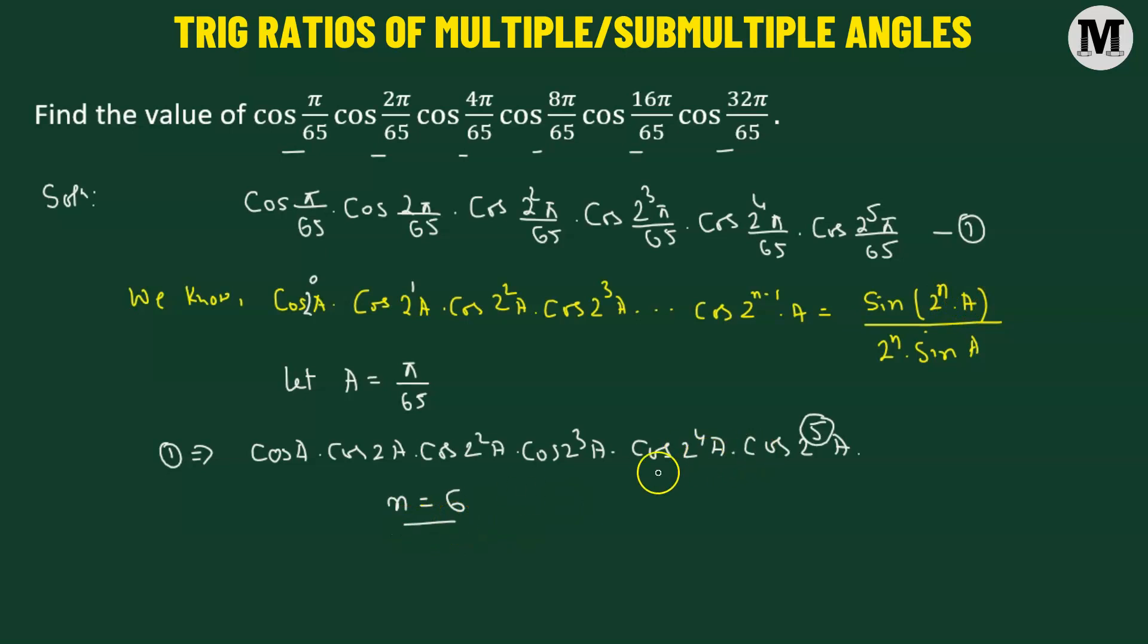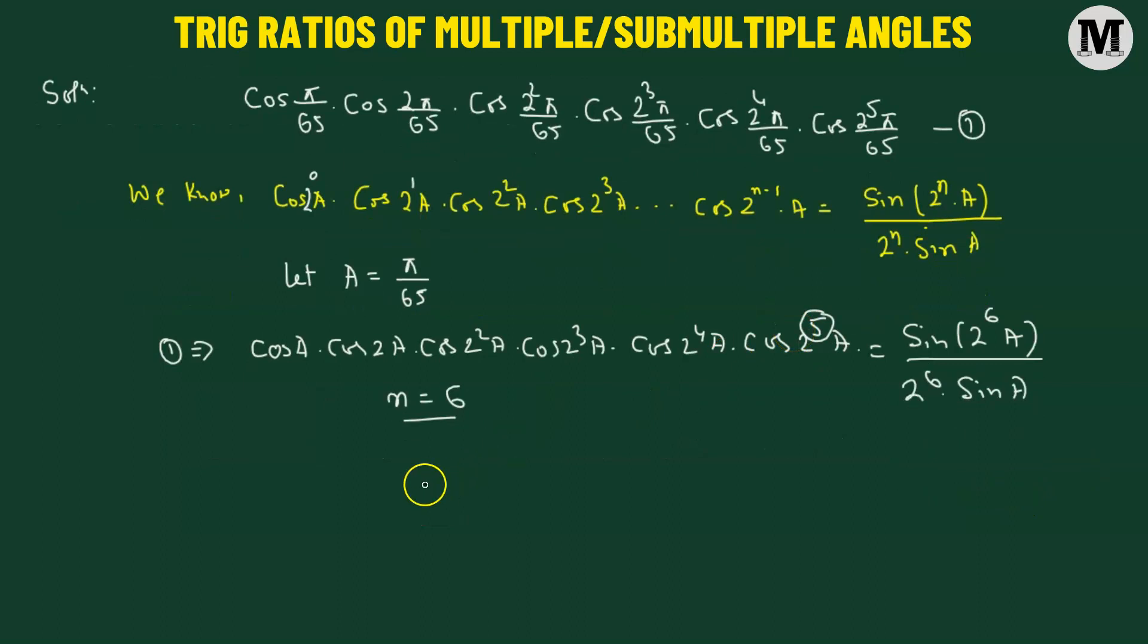So here we have N equals to 6, which means that this particular formula is now going to transform into sine of 2 raised to the power of 6 times angle A divided by 2 raised to the power of 6 times sine of angle A. Let's simplify this.